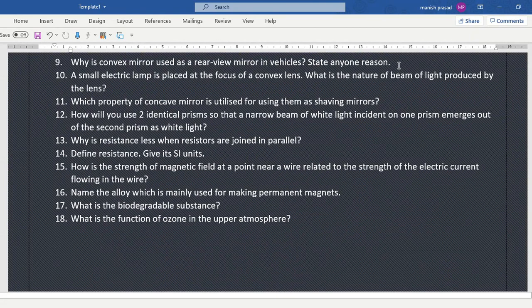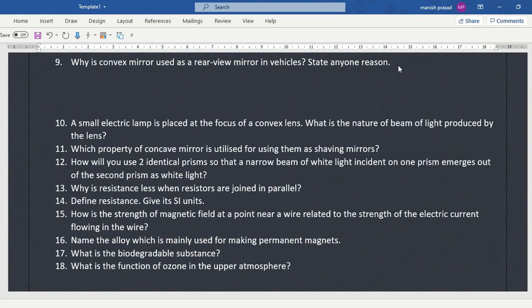Why is a convex mirror used as a rear-view mirror? So it gives a wider field of view. Exactly. It gives a wider field of view and it always gives us a virtual, erect, and a diminished image. So image is always virtual and erect and it is diminished. Okay, as well as all image form, larger area cover, cover traffic. Ha, toh usi ko kehte hai wider field of view.